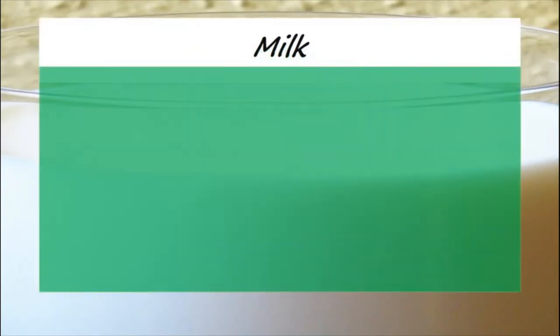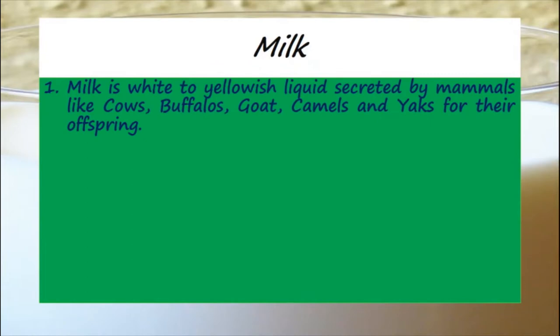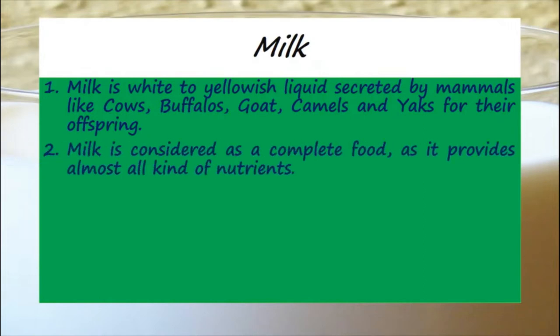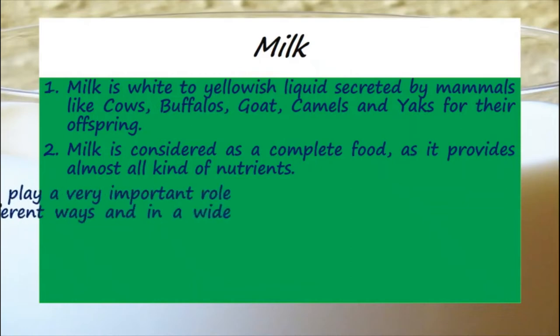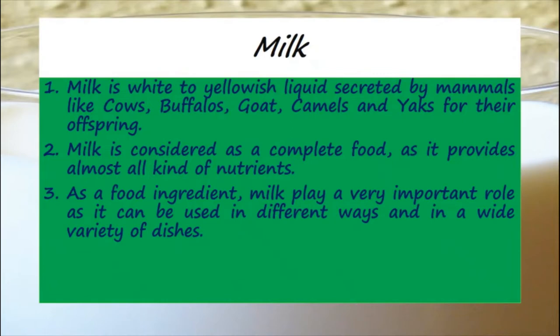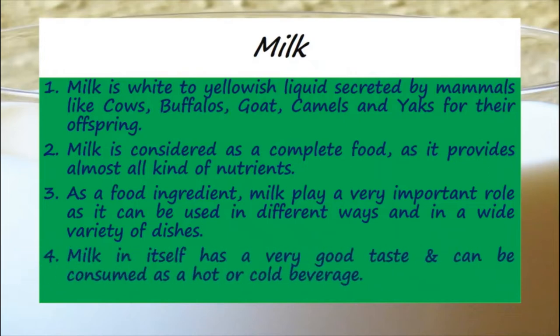Milk is a white to yellowish liquid secreted by mammals like cows, buffalos, goats, camels and yaks for their offsprings. Milk is considered a complete food as it provides almost all kinds of nutrients. As a food ingredient, milk plays a very important role as it can be used in different ways and in a wide variety of dishes. Milk in itself has a very good taste and can be consumed as a hot or cold beverage.